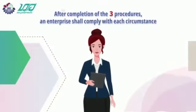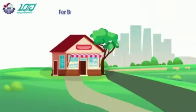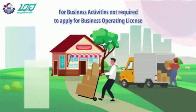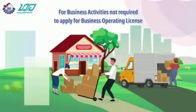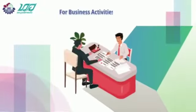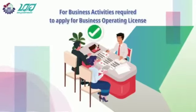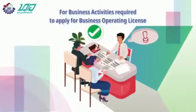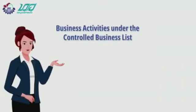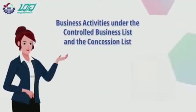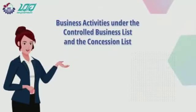After completion of the three procedures, an enterprise shall comply with each circumstance. For business activities not required to apply for a business operating license, the investor can immediately operate the business as stated on the back of the enterprise registration certificate. For business activities required to apply for a business operating license, the investor shall apply for a business operating license as stated in the relevant laws and regulations.